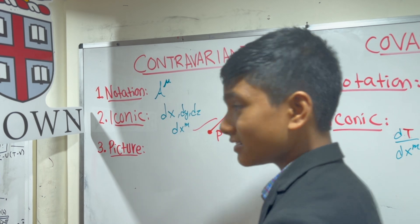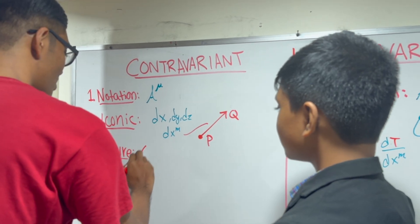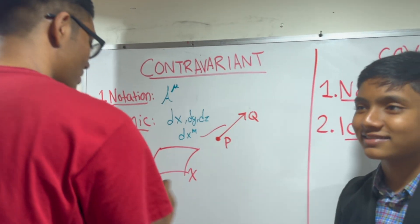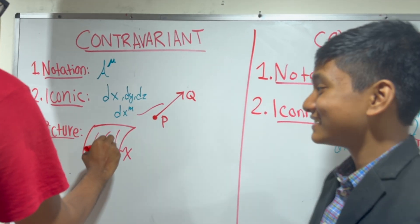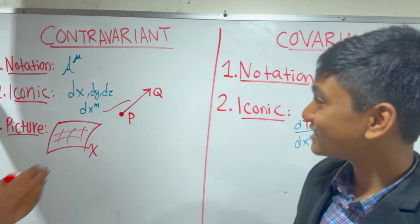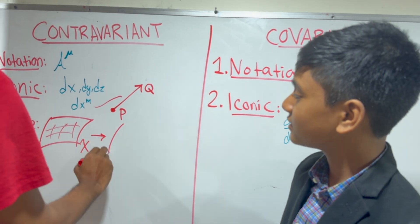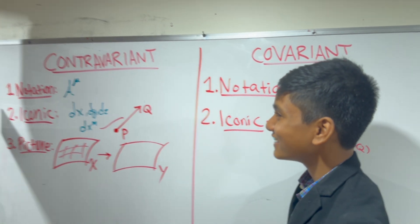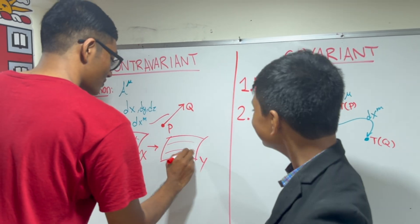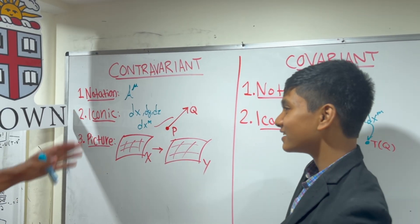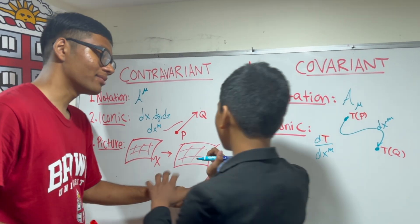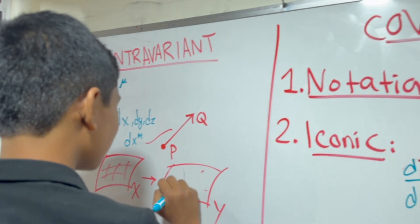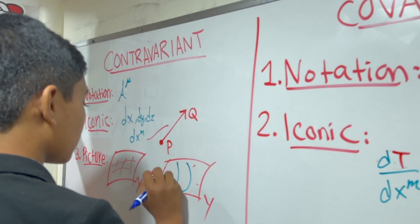The picture for a contravariant vector is that we start with a manifold that's described by a certain coordinate system x. Here's my coordinate system x. Then I transform. We have the same manifold, but we use a different coordinate system.